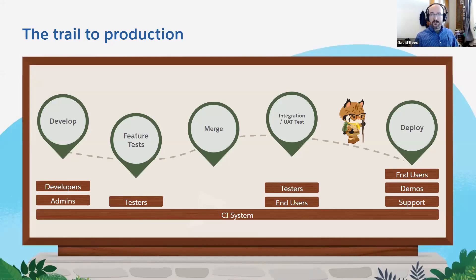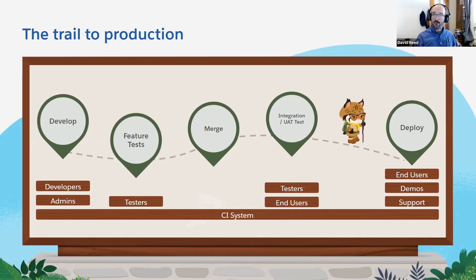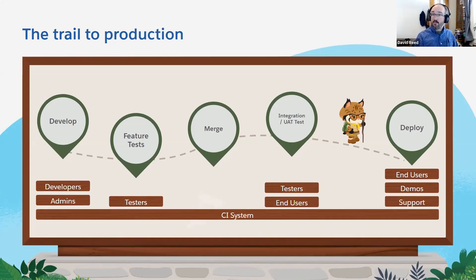We start on the left with initial development — that's where your developers and admins are, building features targeted for the next release. They're operating in isolated environments, hopefully with their own individual environments. As features near completion, you bring in your testing and QE team to do a feature test, evaluating new work before stage three — the merge — where you take that new work and integrate it into the body of your application as part of a release candidate.